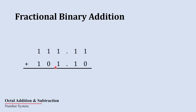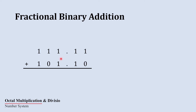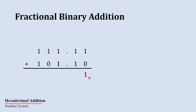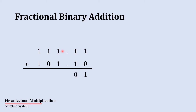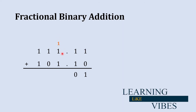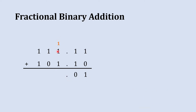Now we are going to add two fraction binary numbers: 111.11 and 101.10. Our addition will start with the rightmost column of the fraction part. This is our fraction part and this is our whole number part. The rightmost column of the fraction part is where addition begins. So 1 plus 0 is 1. When we add 1 plus 1 the sum is 0 and the carry to the next column is 1. Since the next column is in the whole number part, we carry 1 there and place a point in the summation.